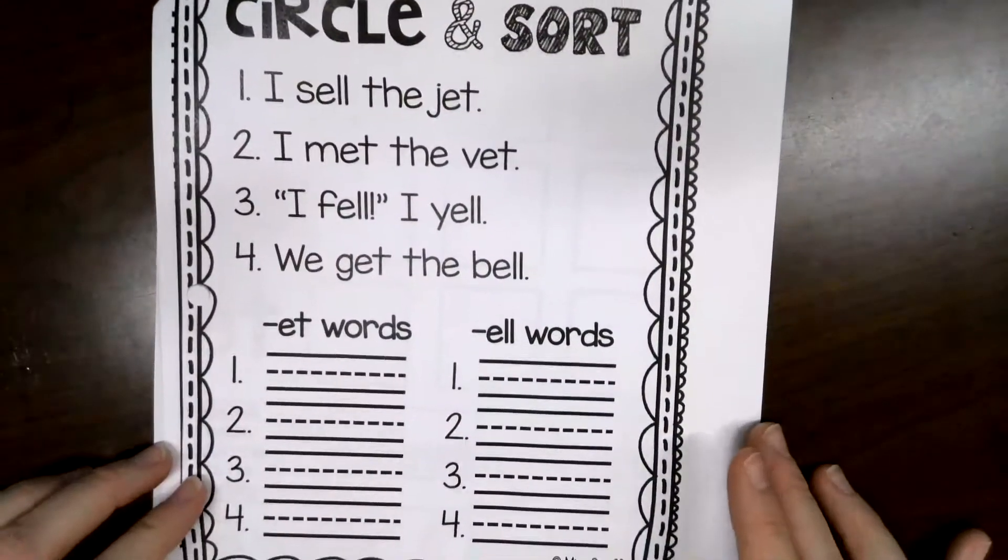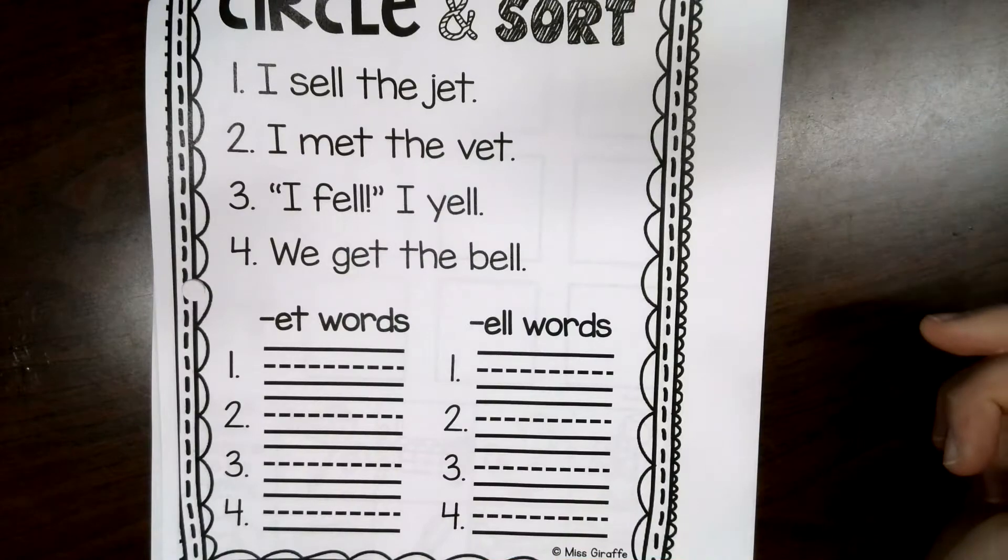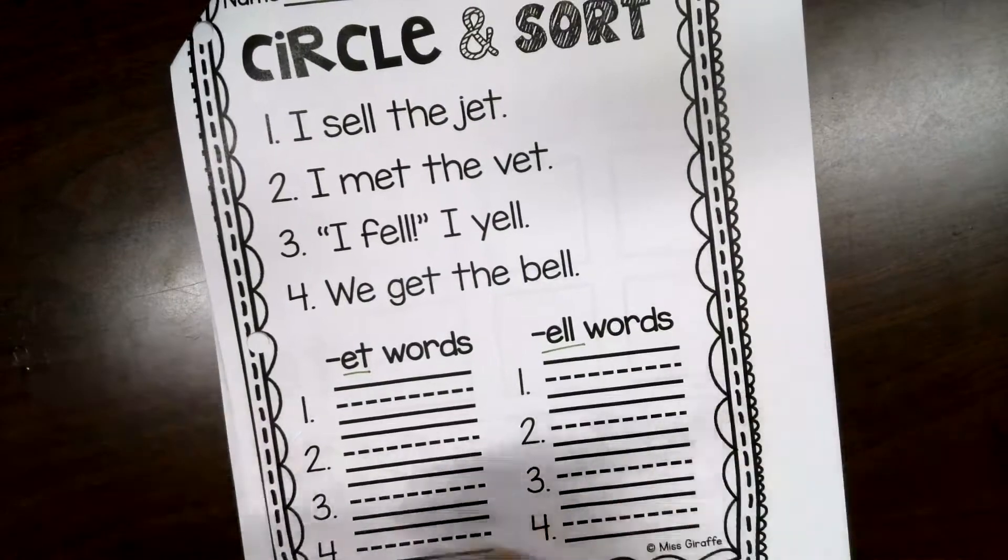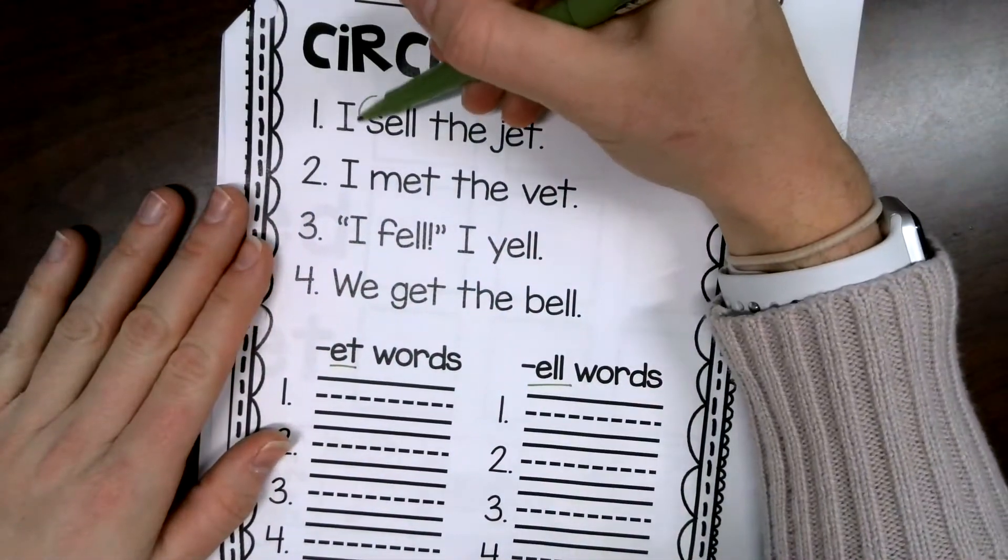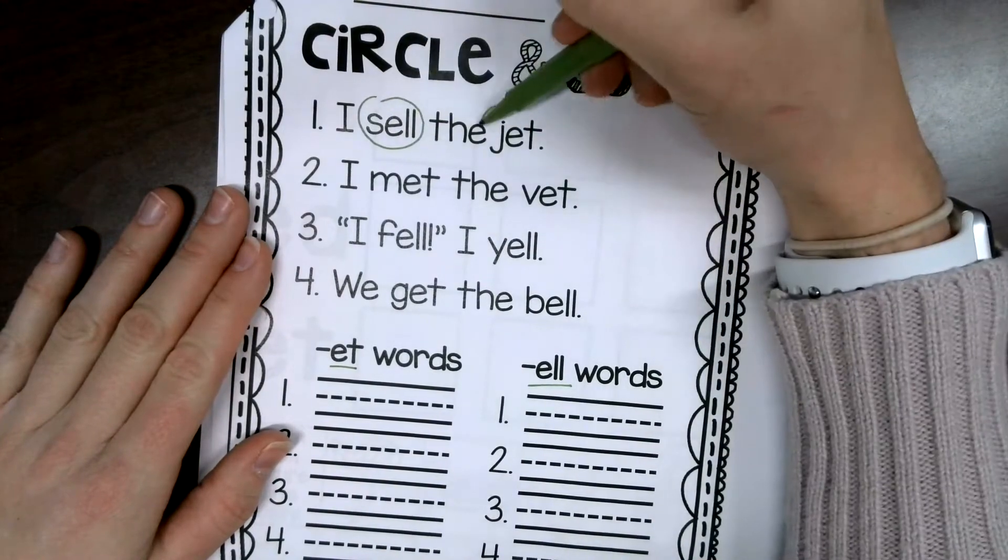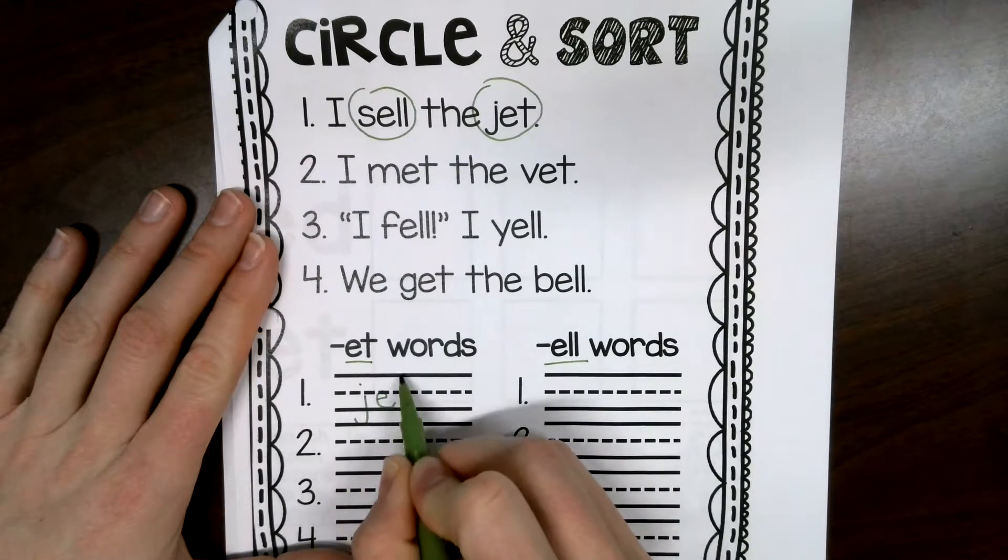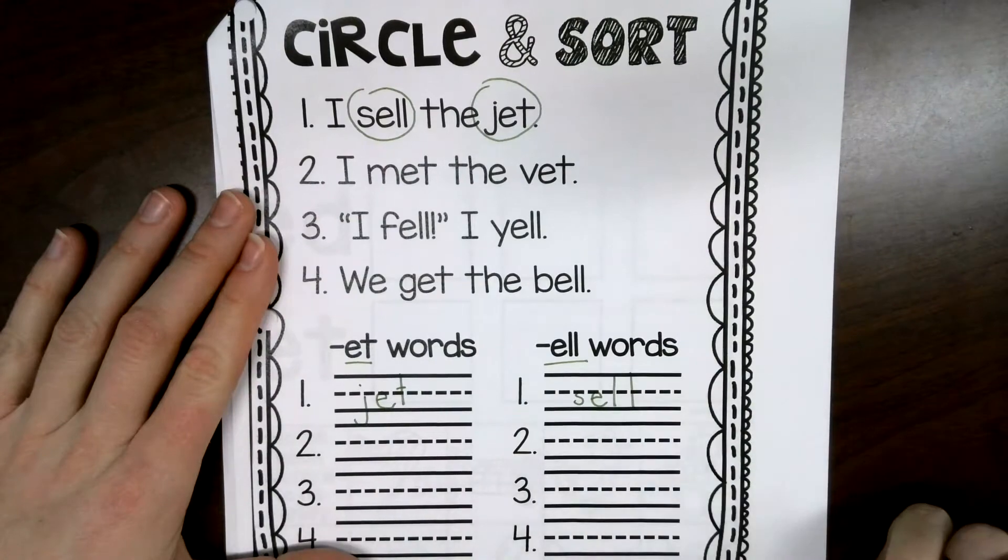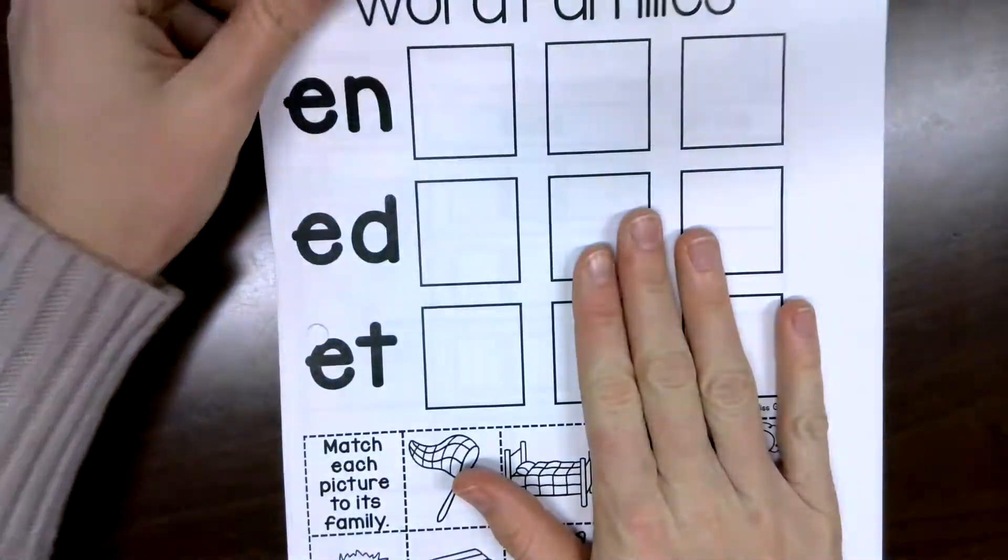And the last page for our phonics practice is one that I know we've done before. This one is where you need to circle the words that end with E-T or E-L-L. So, I sell the jet. I know sell is one of the words and jet is one of the words that I'm looking for. So, I would write jet on this line and then sell on this line. And then finish the last ones with that. So, that is our phonics practice for today.